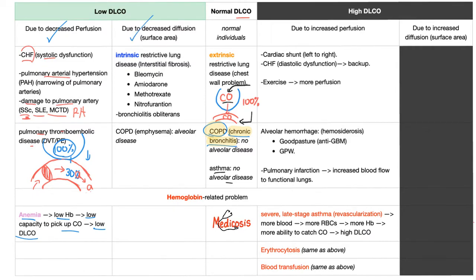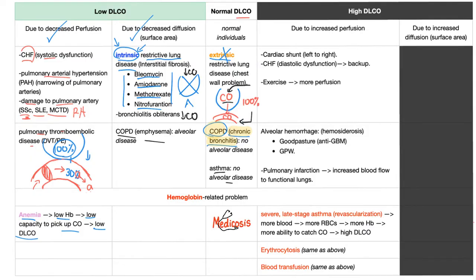The second half: decreased DLCO due to decreased diffusion — decreased surface area of the alveolus available for exchange. This is intrinsic restrictive lung disease — the problem is in the lung itself — such as bleomycin, amiodarone, methotrexate, or nitrofurantoin, all of which lead to pulmonary fibrosis. The alveolar interface is damaged, so less CO ends up in the alveolus and less CO ends up in the pulmonary artery. Similarly, COPD due to emphysema: elastase destroys elastin, the elastic fibers in the alveoli are gone, the alveolar unit is destroyed, and DLCO is low.